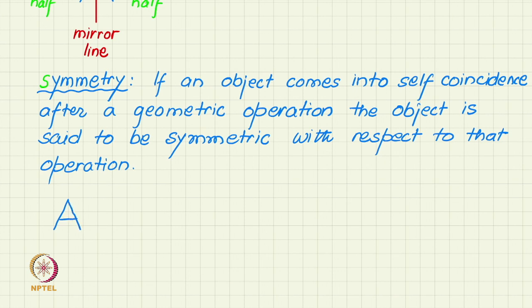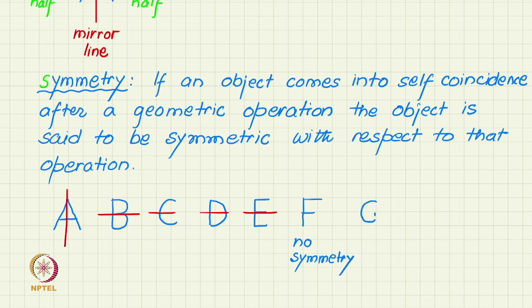Letter A we have already seen has a vertical mirror. If we look at the next letter B, that seems to have a horizontal mirror. And then C, D, and E, all of these have horizontal mirrors. F does not seem to have any symmetry. Same is the case with G.